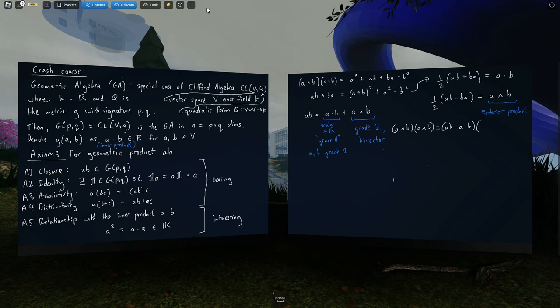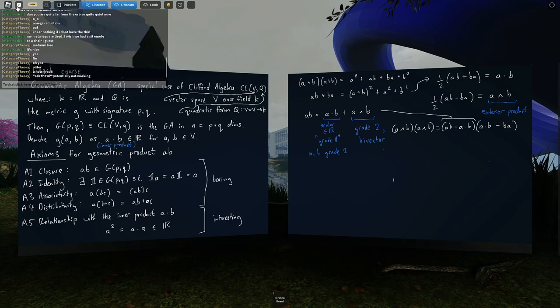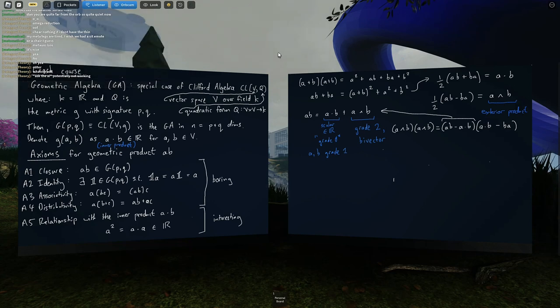I'm going to use the antisymmetry of the exterior product to write the exterior product between A and B in two different ways. The first one just follows directly from over here. And if I write down the equivalent formula for BA, I get BA = B·A, which is the same as A·B, plus B∧A, which is the same as minus A∧B, which gives me the second term there.